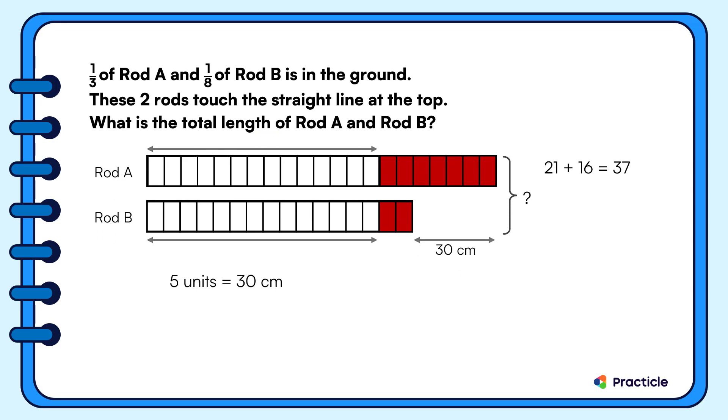So let's make use of this to find the value of 1 unit. When we divide 30 by 5, we are going to get 6. And once we know that 1 unit represents 6 centimeters, we are just 1 step away from getting our answer. Let's find how long 37 units represent by multiplying 37 by 6.